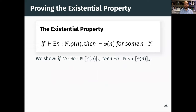Here's the proof. We want to show: if exists N, φ(N) is provable, then in fact there exists N such that φ(N) is provable. We expand this into its step-index model: for all α, there exists N, φ(N, α) holds; then we want to show there exists N, for all α, φ(N, α) holds.